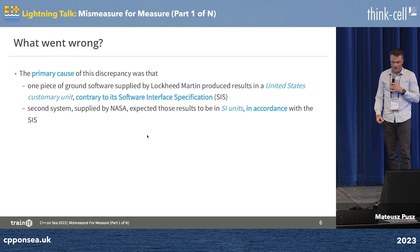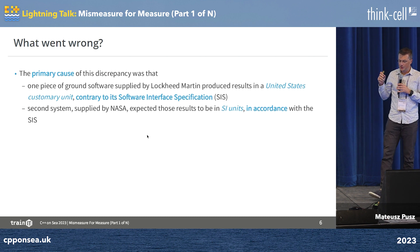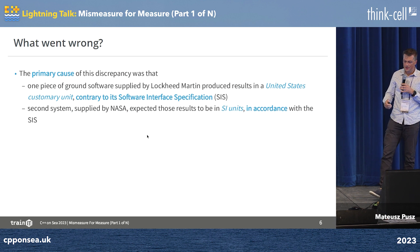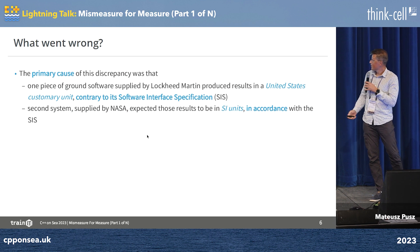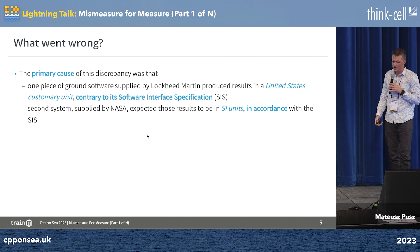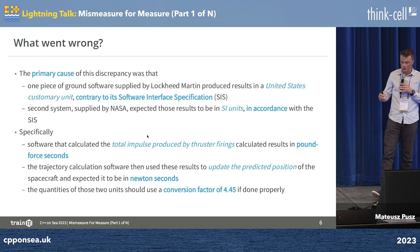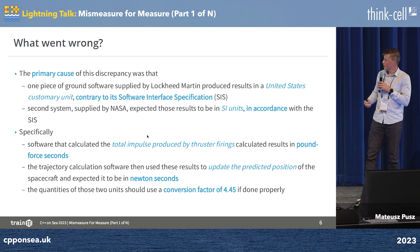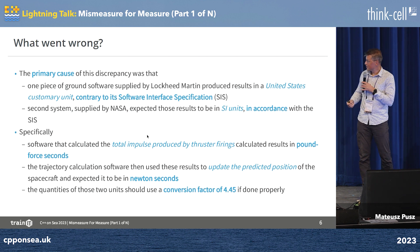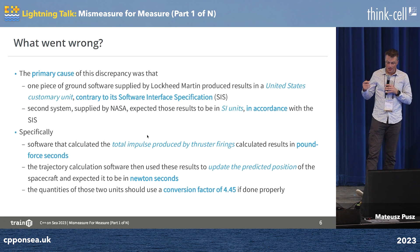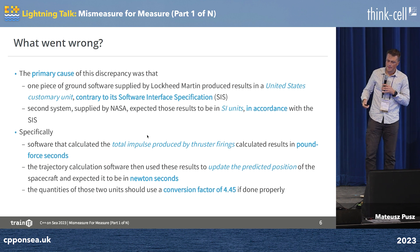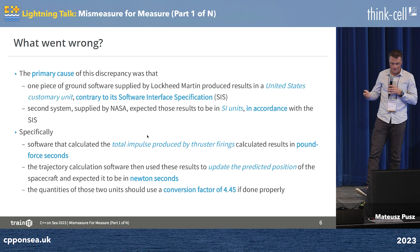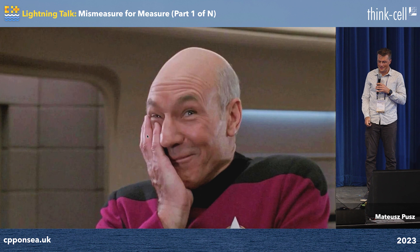So what went wrong? It turns out the primary cause was the fact that two companies were working on the same software. Lockheed Martin was using the United States customary unit system to express some quantities, while NASA used SI — and the official specification for how they should interface with each other was SI as well. So NASA was correct, and Lockheed Martin used incorrect units. Specifically, the units involved were pounds per second to express the thrust provided by the thrusters, used by NASA to update the trajectory in the space probe software. The conversion factor between those is 445 if done correctly.